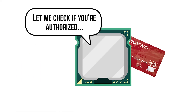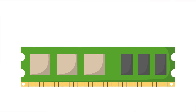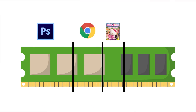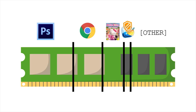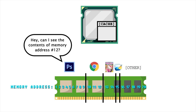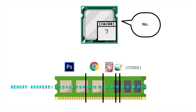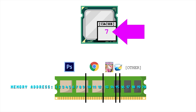rather than first checking to see if that program is even allowed to access that data. Whenever you have more than one program running, your CPU will separate your system RAM into different chunks that can only be accessed by one program, to keep other ones — including malicious programs — from seeing data that they shouldn't. So let's say that program A asks to see some data from program B's memory space. The CPU will say no, but only after it starts to read that memory, and whatever was in that memory space is already in the CPU's cache.